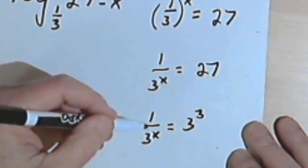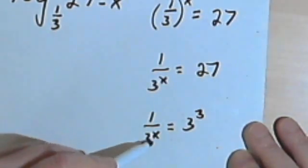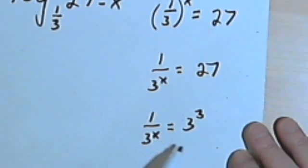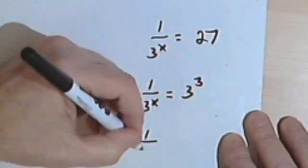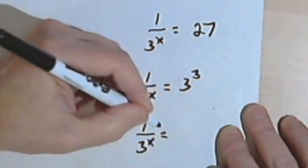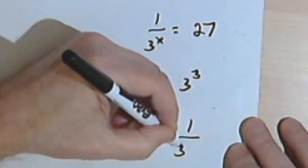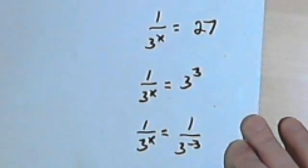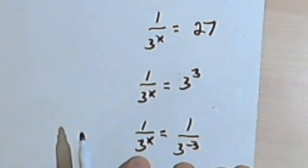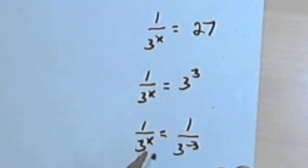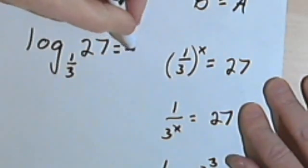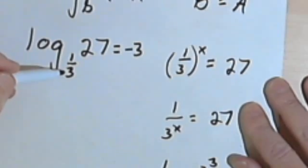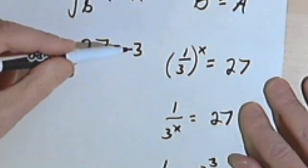And now I've got this fraction on the left side. So what I want to do, since I've got an x down here and I don't want to change that x, I want to change the right side into a fraction. So I can turn that into 1 over 3 to the x equals 1 over 3 to the negative 3. And now what I've got is two fractions that are exactly the same, except in one I've got an x, the other one I've got a negative 3. So x must be the same as negative 3. So the log base 1/3 of 27 equals negative 3.